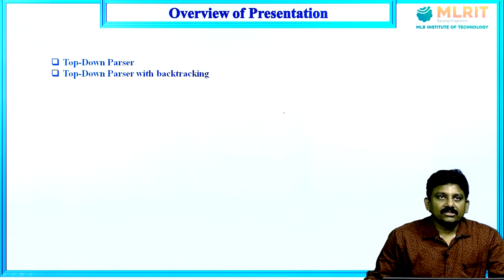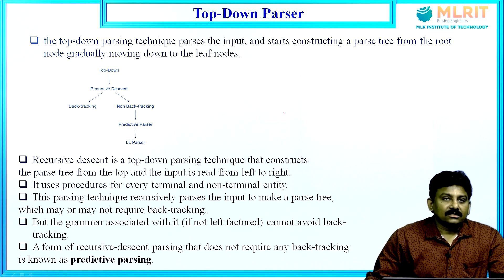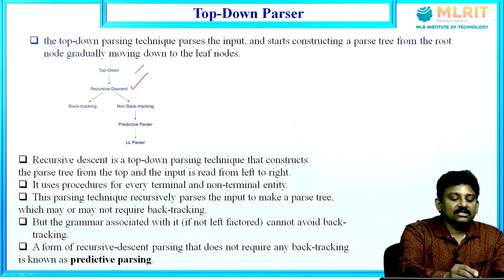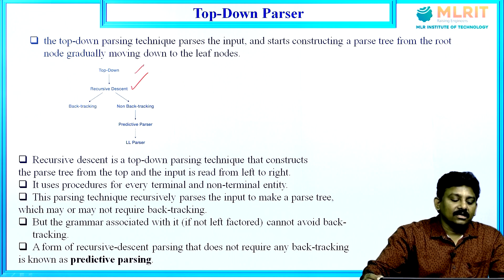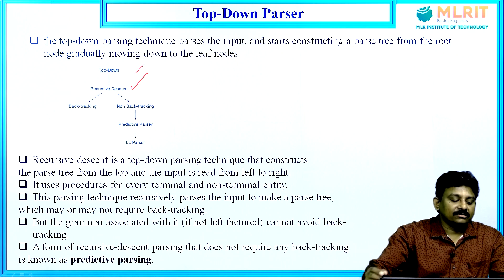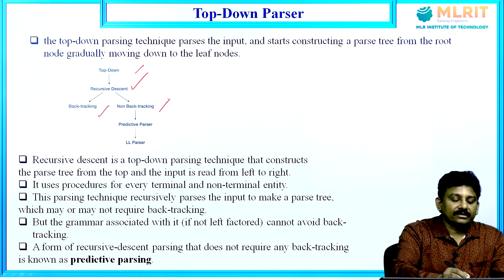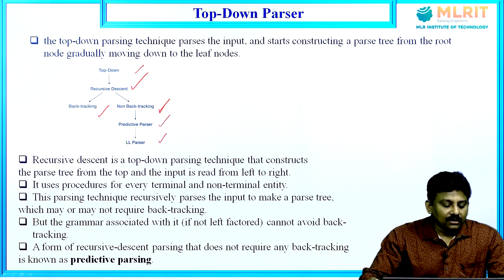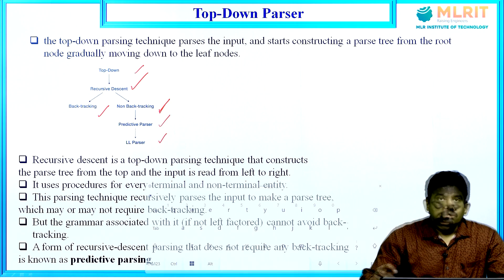Overview of the presentation: top-down parser and top-down parser with backtracking. Recursive descent parser is a top-down parser, and it has two types: recursive descent parser with backtracking and without backtracking. The non-backtracking parser is called a recursive predictive parser or LL parser.